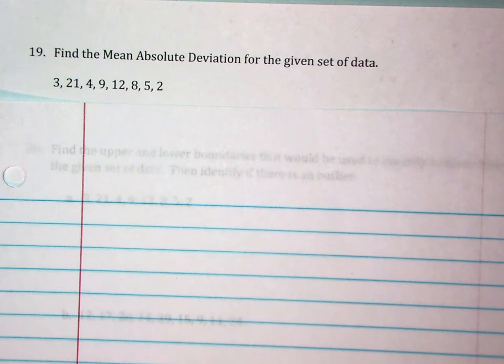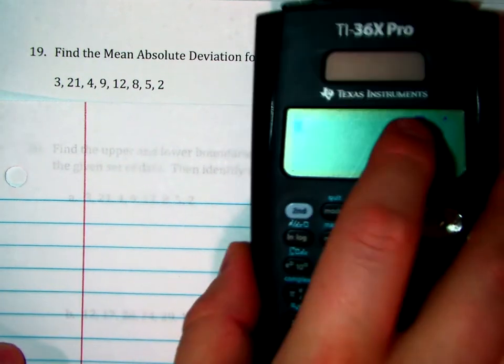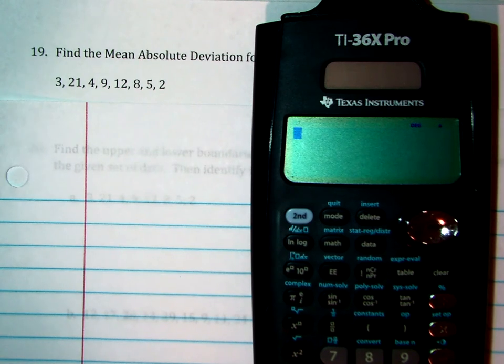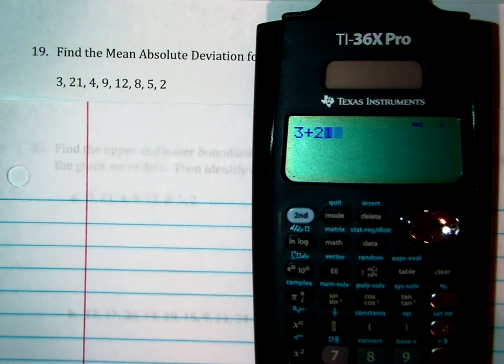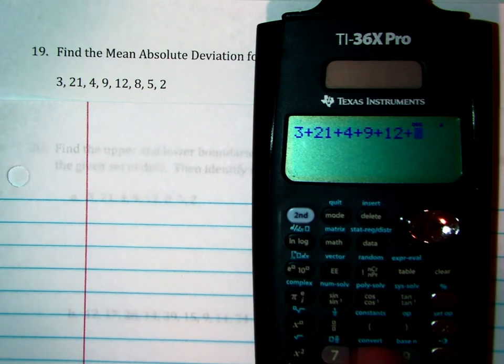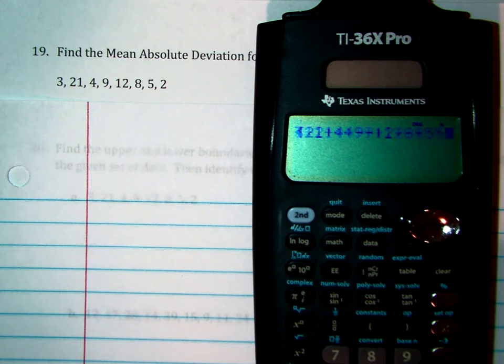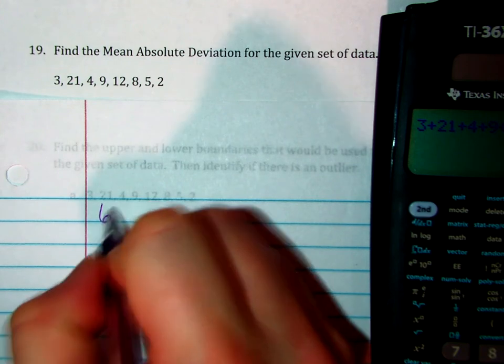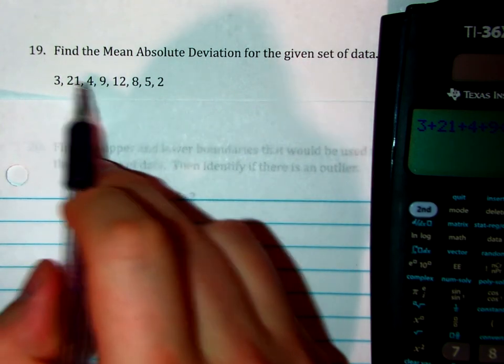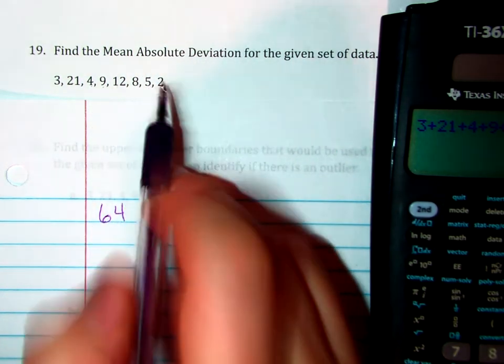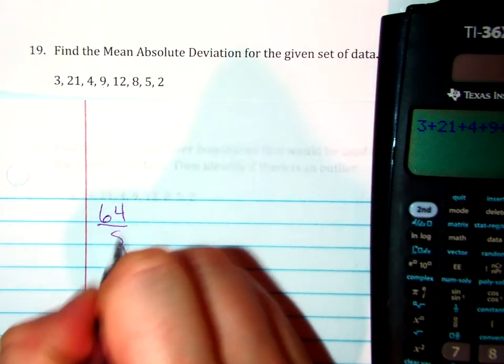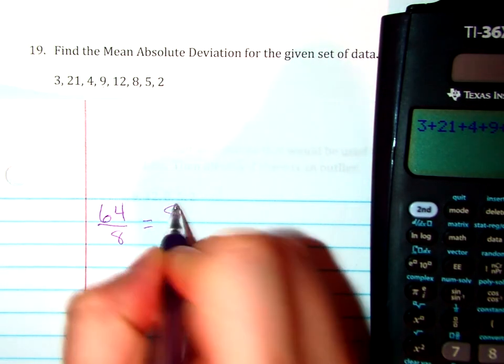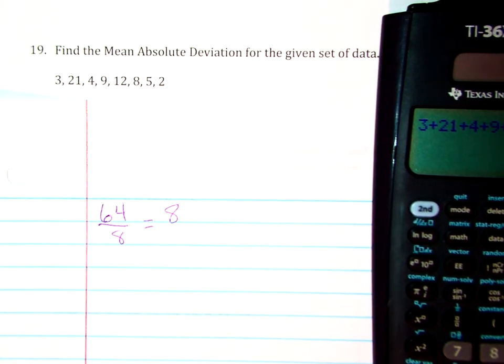The very first thing we need to do is find our mean, so I'm going to use the calculator for that. 3 plus 21 plus 4 plus 9 plus 12 plus 8 plus 5 plus 2, assuming I did all that right, I end up with 64 over 8 equals 8. And since this data is the same set of data that we used from problem 1 or the first page, I know that this answer is correct for the mean.